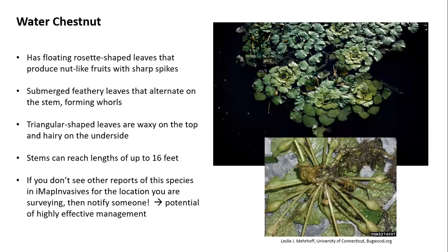Water chestnut has floating rosette-shaped leaves that produce nut-like fruits with really sharp spikes. They have submerged feathery leaves that alternate on the stem forming whorls. The leaves are triangular shaped, waxy on top and hairy on the underside, with stems underneath that can reach lengths of up to 16 feet down in the water column. There's really good potential for highly effective management of this plant if it is addressed early, so if you don't see other reports of it in iMapInvasives, let someone know.